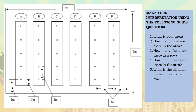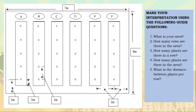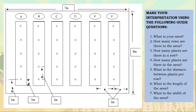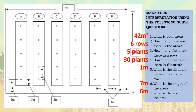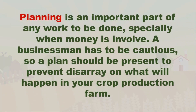What is the distance between plants per row? We have 1 meter. What is the length of the area? We have 7 meters. And what is the width of the area? We have 6 meters. If you got all these 7 questions correctly, congratulations. Now let's proceed to our discussion.